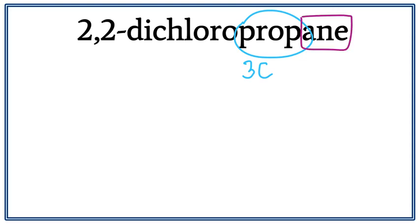This ane here tells us that this is an alkane, meaning that there are only single bonds between carbons.